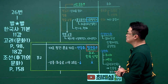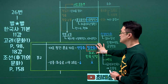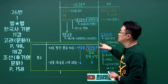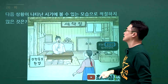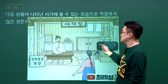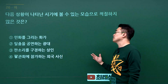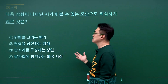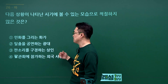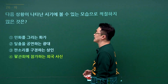고려 팔관회 관련 문제입니다. 태조 왕건 때 팔관회가 있었습니다. 이 시기에 볼 수 없는 모습을 고르는 문제인데 춘향전과 상평통보는 조선 후기 것입니다. 민화, 탈춤, 판소리는 조선 후기에 볼 수 있지만 팔관회는 고려시대이므로 팔관회가 정답입니다. 정답은 4번입니다.